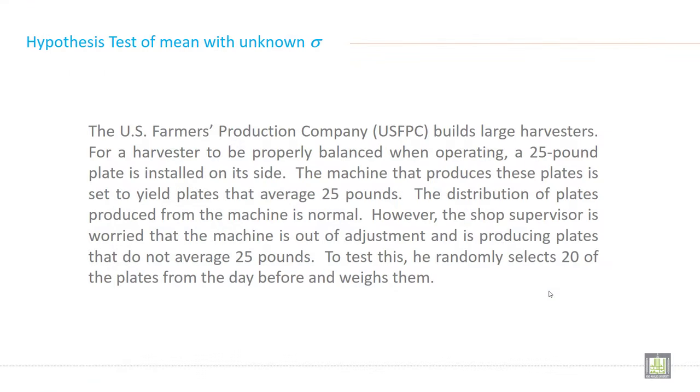So just try to focus on this hypothetical example. The U.S. Farmers' Production Company builds large harvesters. For a harvester to be properly balanced when operating, a 25-pound plate is installed on its side. The machine that produces these plates is set to yield plates that average 25 pounds.